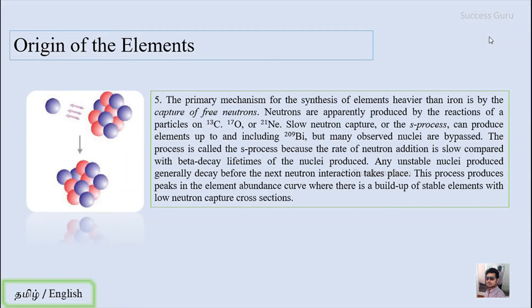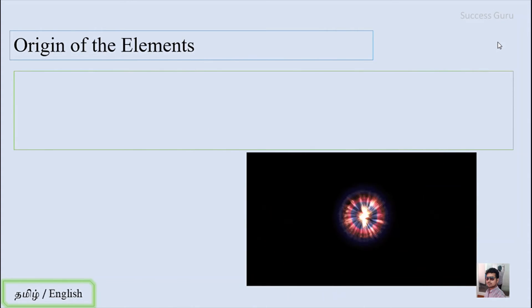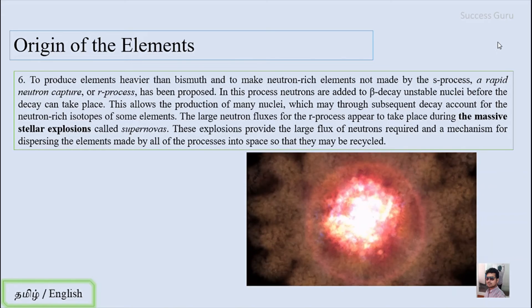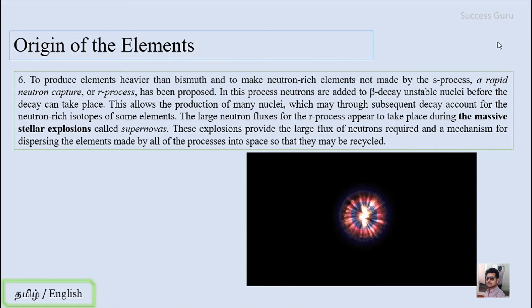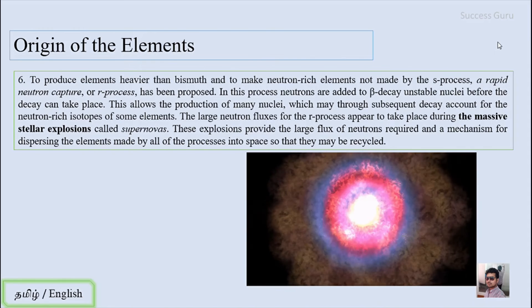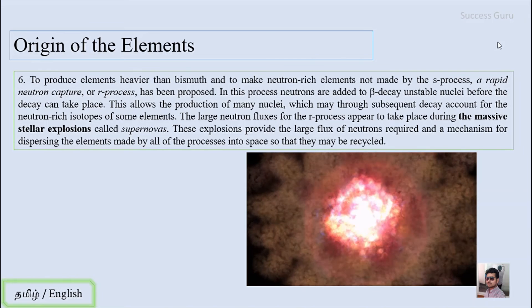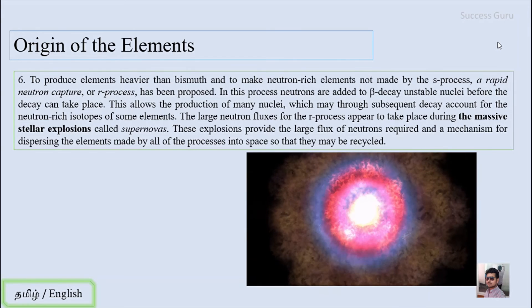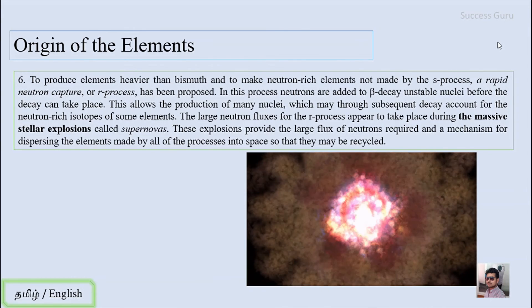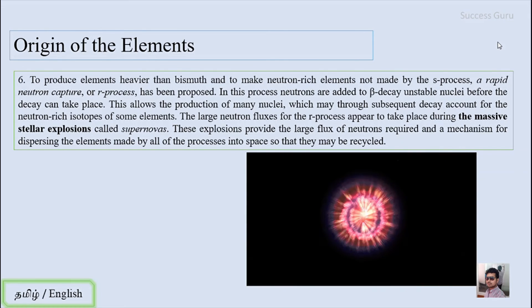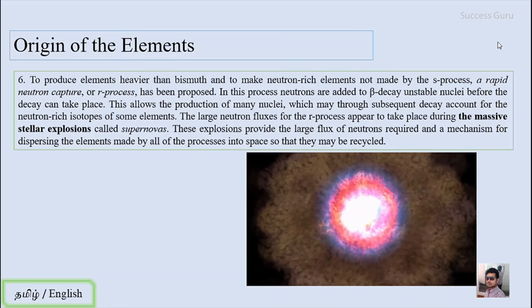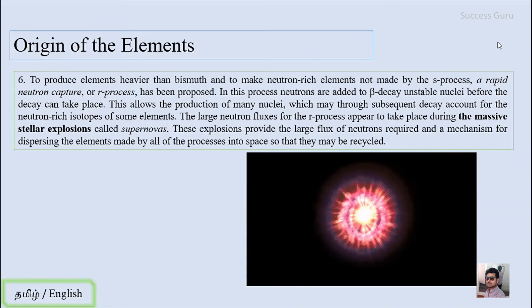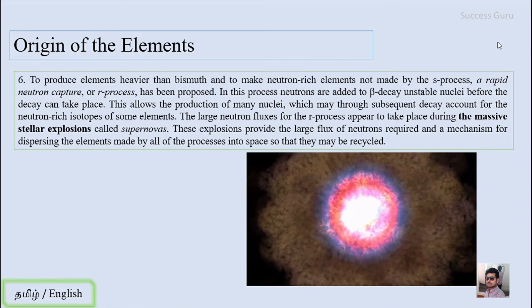The sixth process should produce elements heavier than bismuth and make neutron-rich elements not made by the s-process. A rapid neutron capture, or r-process, has been proposed. In this process, neutrons are added to beta-decay unstable nuclei before decay can take place, allowing production of many nuclei which may not occur subsequent decay. This accounts for the neutron-rich isotopes of some elements. The larger neutron flux for the r-process appears to take place during massive stellar explosions called supernovas. This explosion provides the large flux of neutrons required and the mechanism for dispersing the elements made by all the processes into space so they can be recycled.